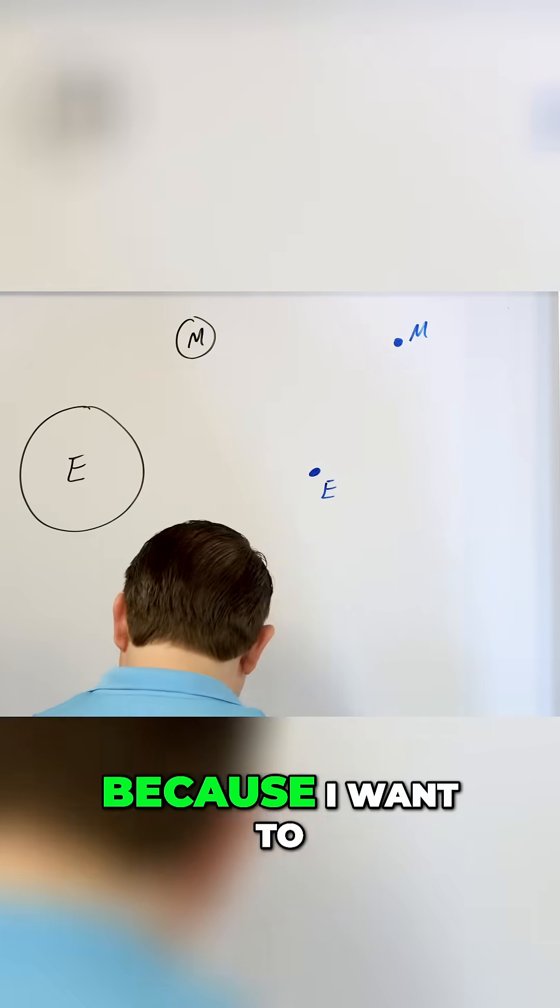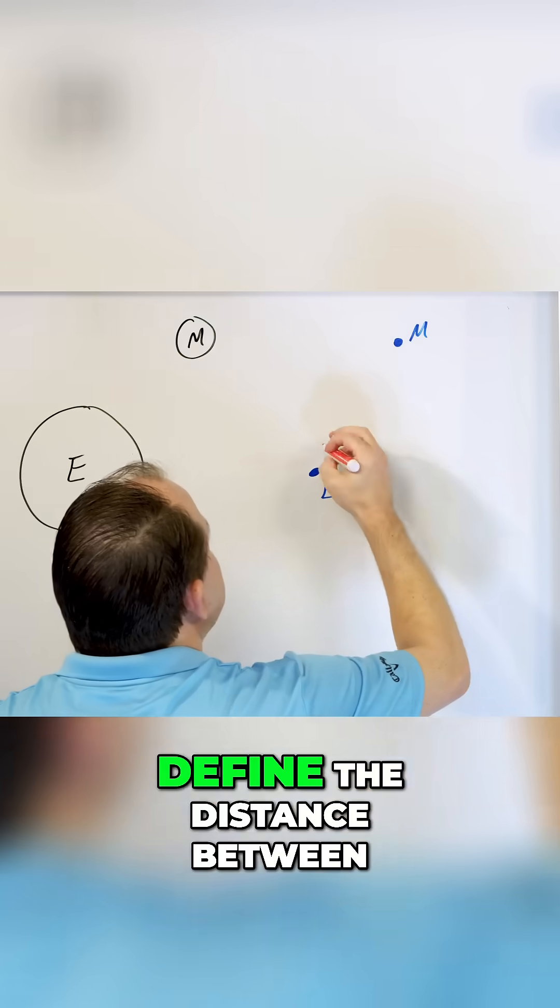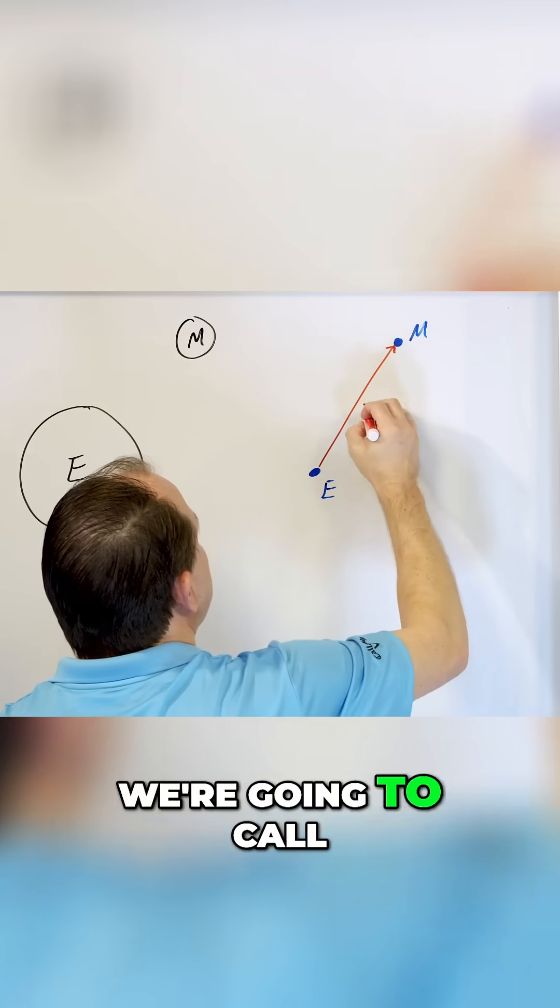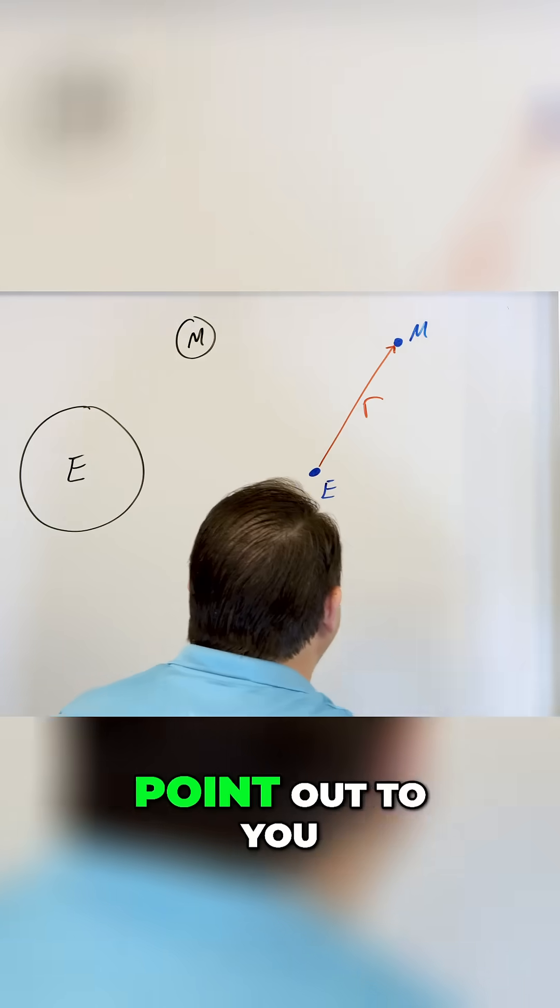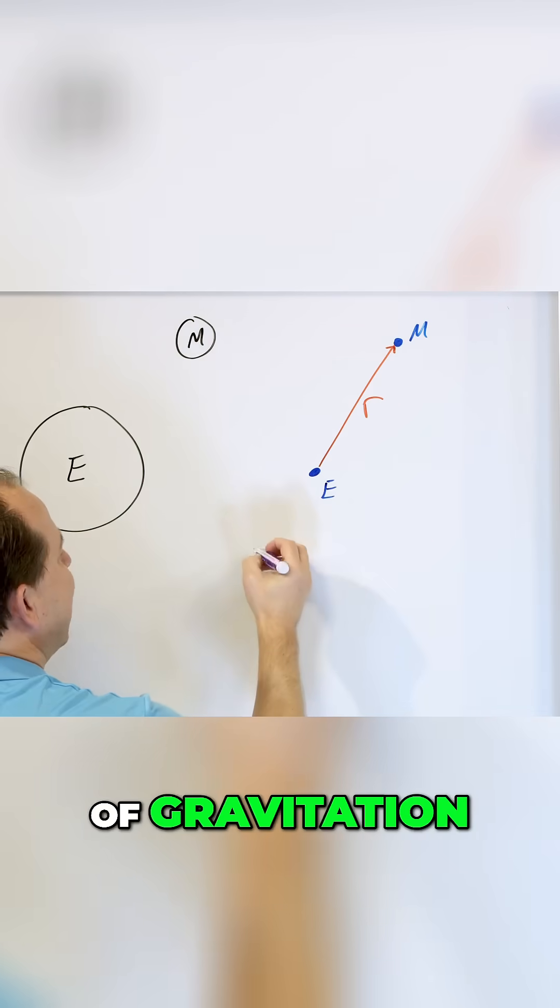Now, why am I doing that? Because I want to define the distance between the Earth and the Moon. We're going to call it R. Now, what I want to point out to you is that the law of gravitation...